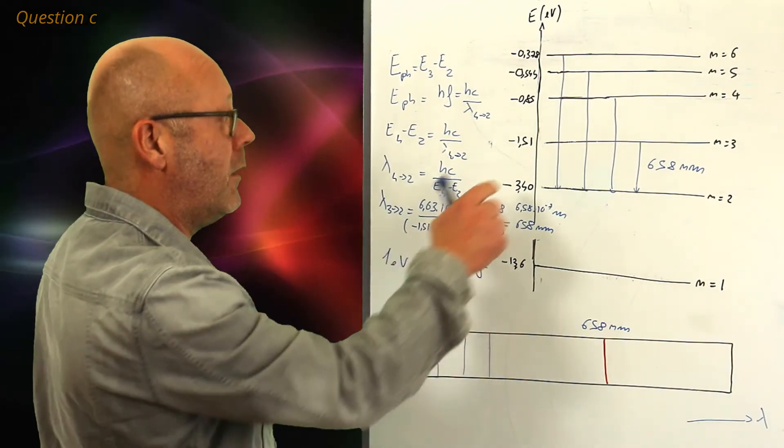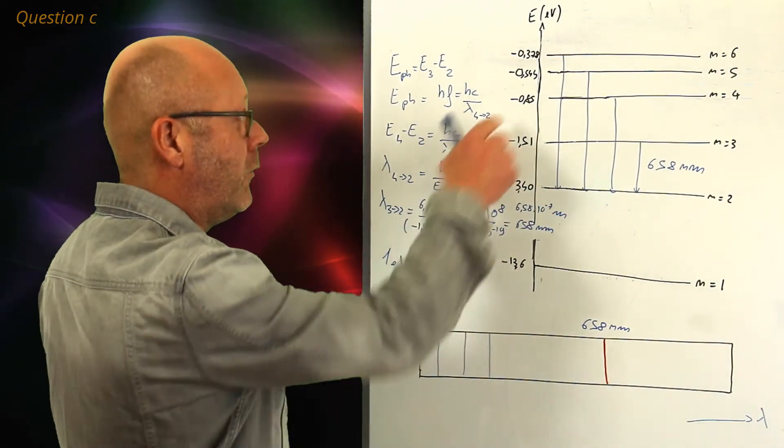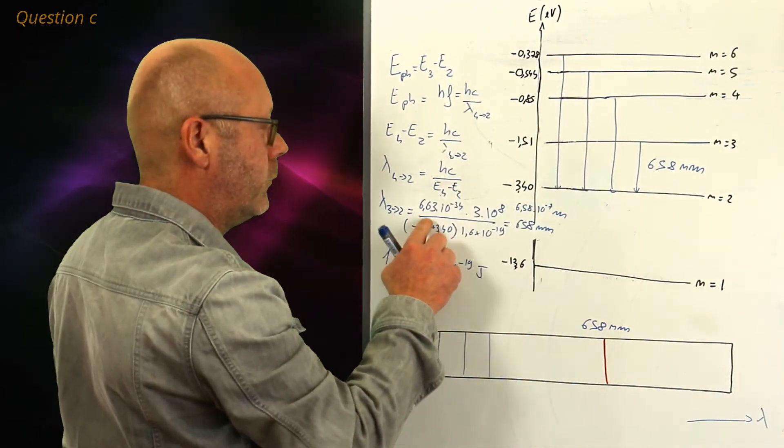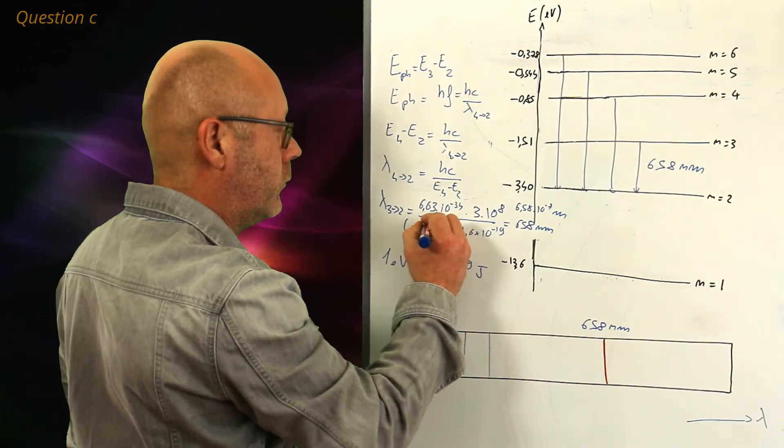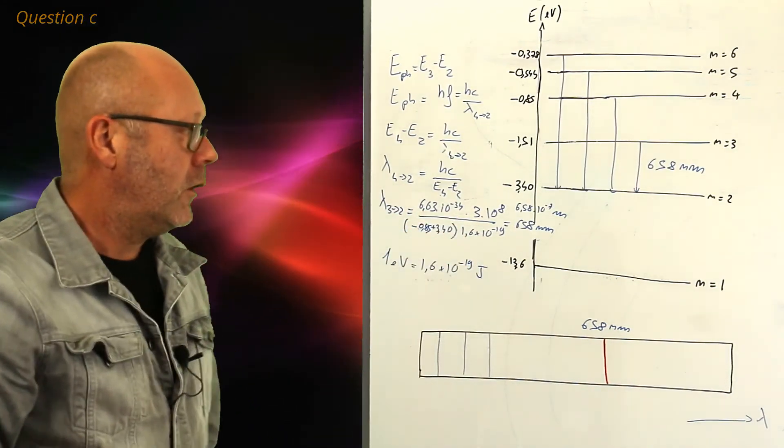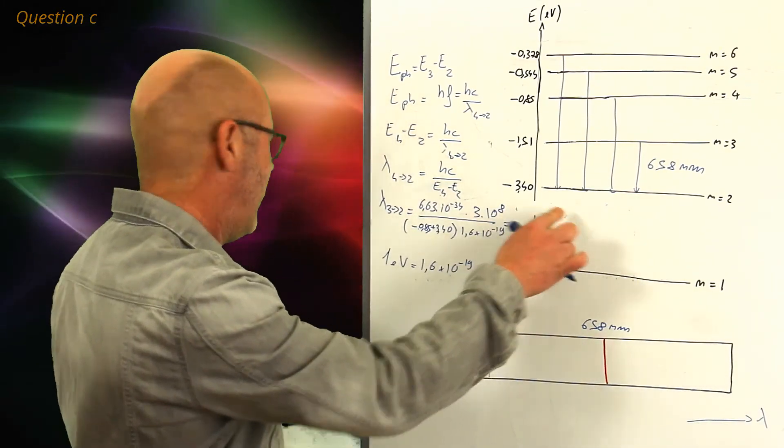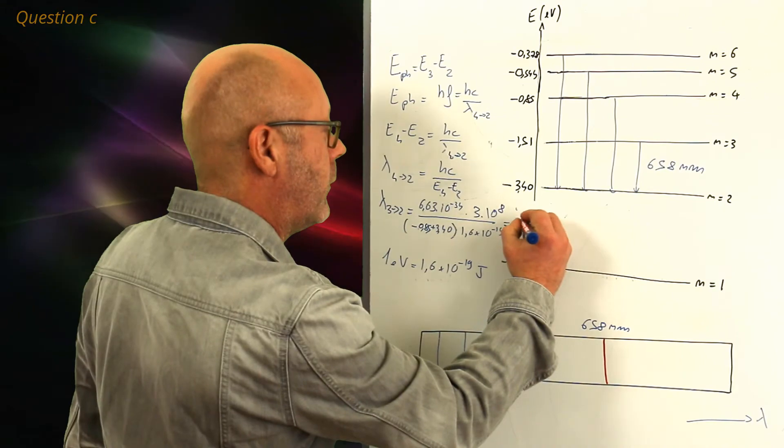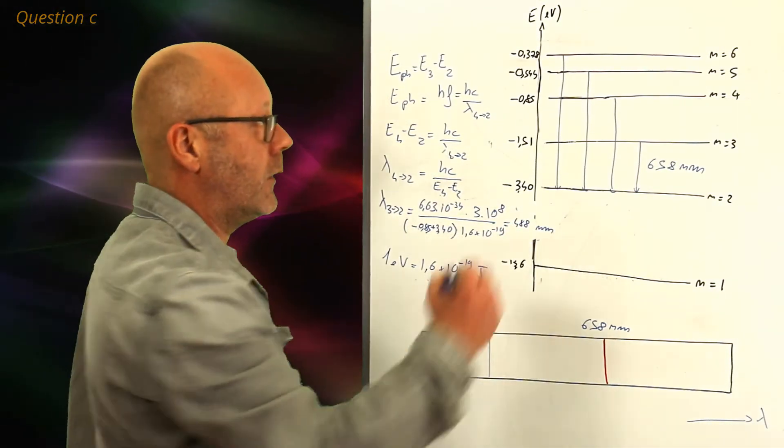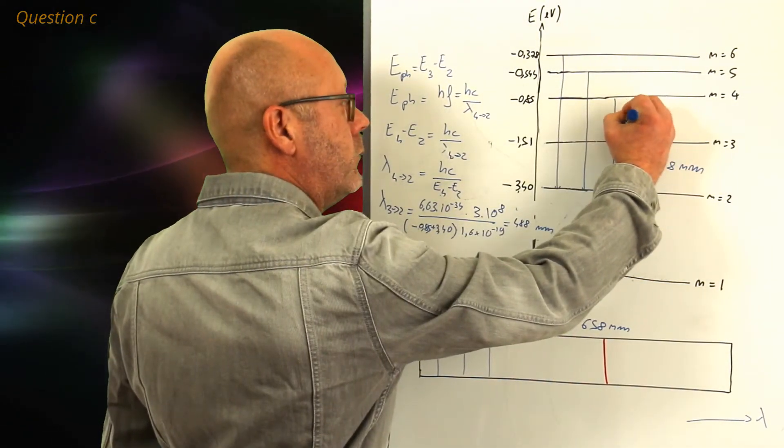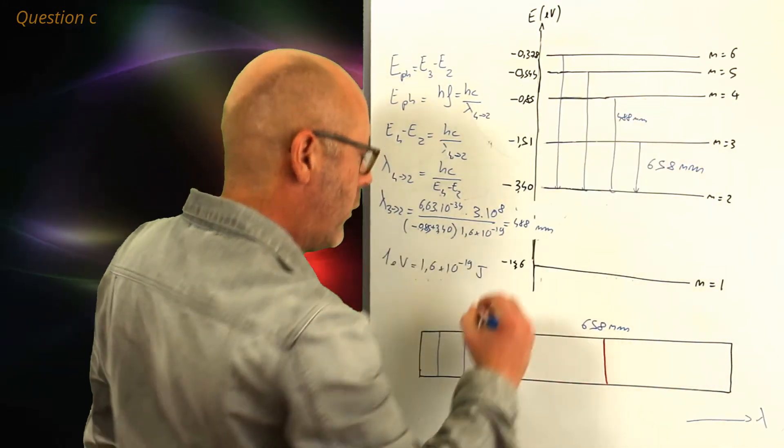So, it would not be from 151 to 340, but from 0.85. So, if you have a... Sorry, it's not 658 anymore. What I found was 488 nanometers. So, that would be this one. Therefore, this one.